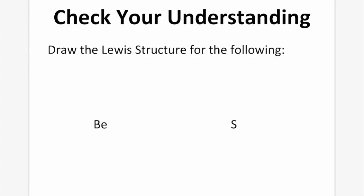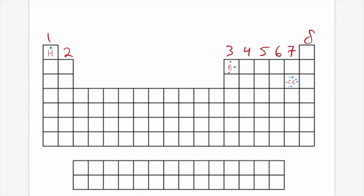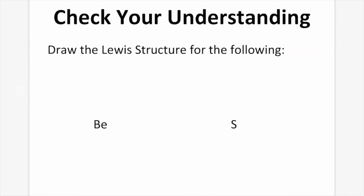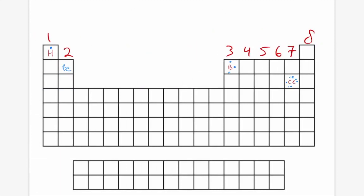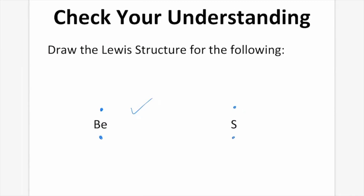Check your understanding. Pause the video and complete these two Lewis structures. Beryllium is in group 2, located here on the periodic table, so it has 2 valence electrons — north and south, and we're done. Sulfur is located right underneath oxygen in group 6, right beside chlorine. Since it's in group 6, it has 1, 2, 3, 4, 5, 6 valence electrons, and we're done.